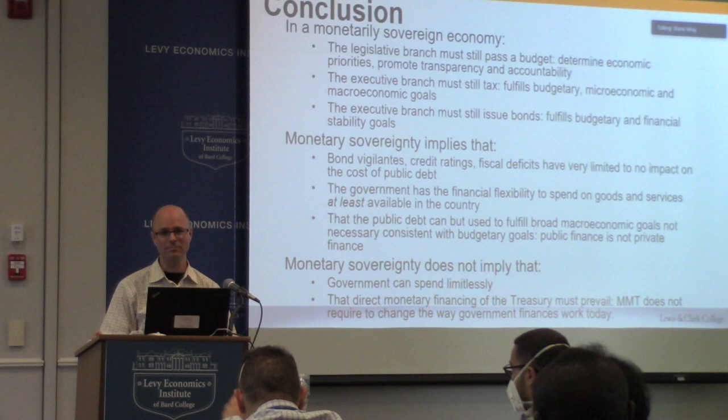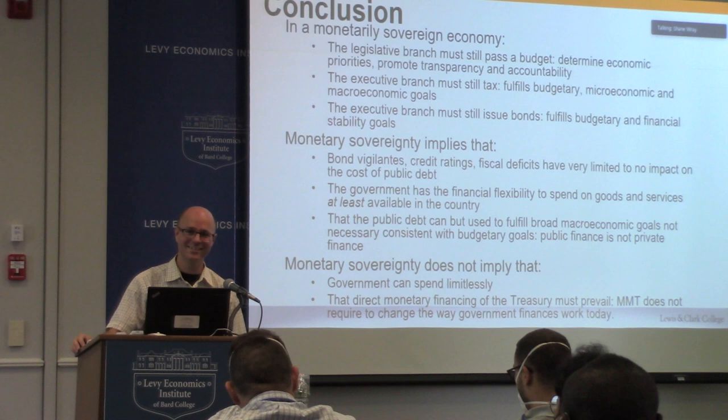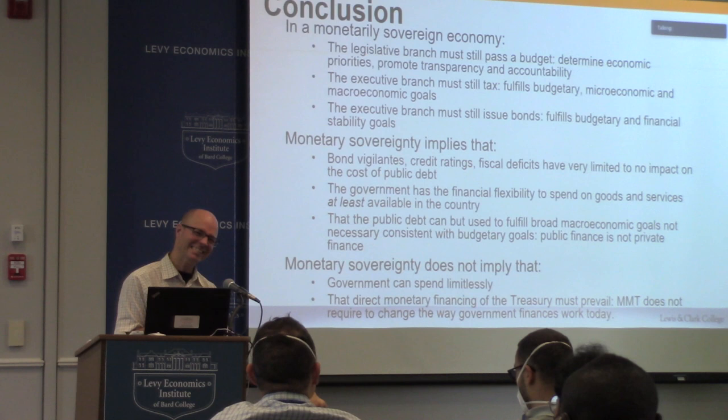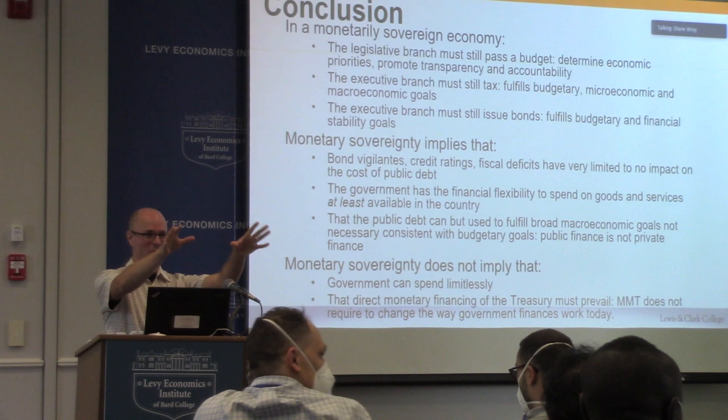A questioner asks whether there is an accounting model of US government operations like the one for the UK Exchequer. The speaker confirms there is a paper online covering this for the US. Another questioner notes the consolidated view creates a common language across countries and asks whether the consolidated versus coordinated view changes the implications for the rest of government — Congress and other institutions. The speaker replies that Congress sets spending priorities and tax policy, while the Treasury simply implements what Congress decided — so there's no change in implications, and you could conceptually put Treasury and Congress together since they're doing the same thing.